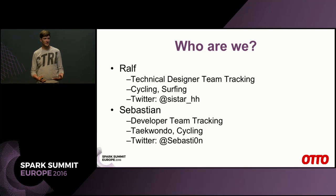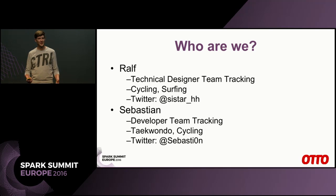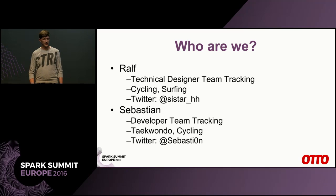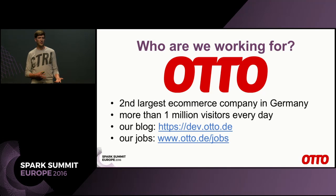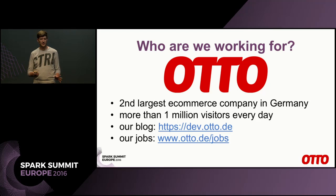So, who are we? Ralf is the technical designer of our tracking team and has been there for around three years. I joined as a developer around two and a half years ago. We both like to cycle. If you want to contact us, just use our Twitter handle. Our company is called Otto — it's the second largest e-commerce company in Germany. We have around one million visitors every day. If you want to find out how we develop software and use continuous delivery, you can check out our blog at dev.otto.de. We have a few articles in English, though most are in German.